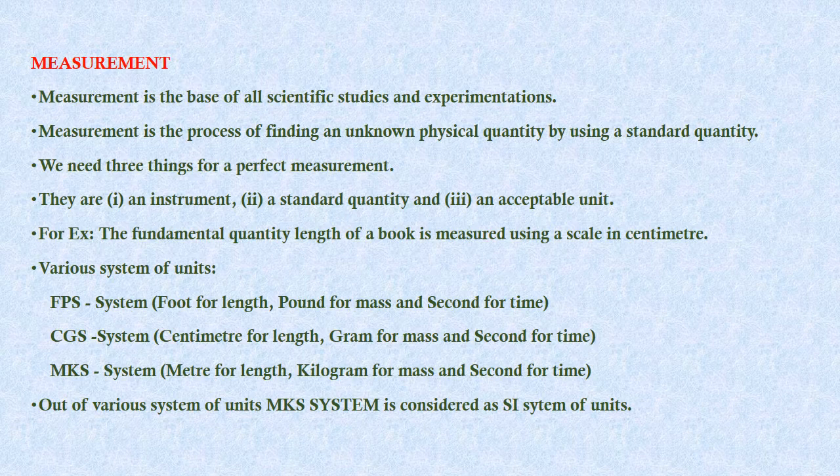We need three things for a perfect measurement: an instrument, a standard quantity, and an acceptable unit. For example, the length of a book is measured using a scale in centimeters. Here, length is the standard quantity, scale is an instrument, and centimeters is an acceptable unit.